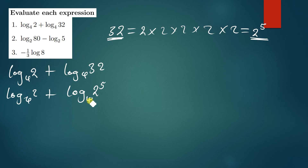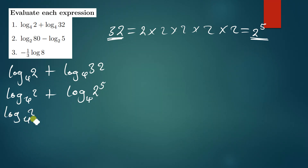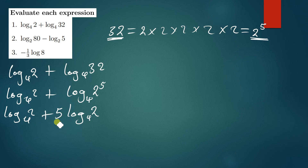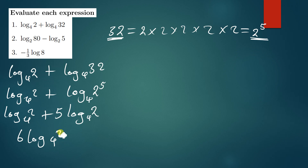The exponent 5 can drop down by the power rule, giving us log 2 base 4 plus 5·log 2 base 4. Now we have like terms, so adding them gives us 6·log 2 base 4.